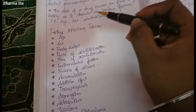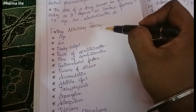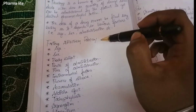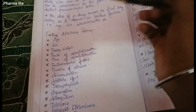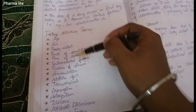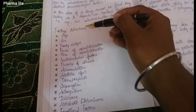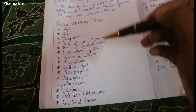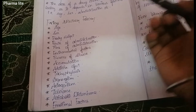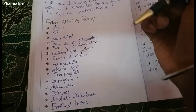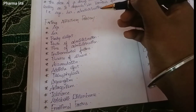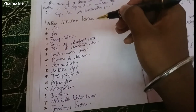Factors affecting Posology. The key factors that affect drug calculation include: age, sex, and body weight.